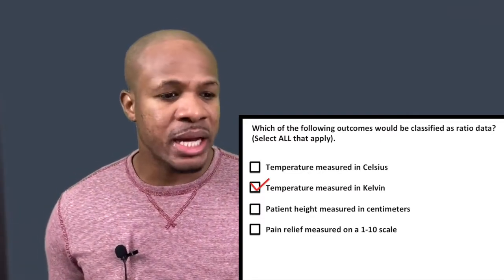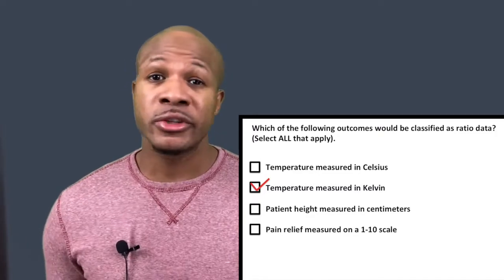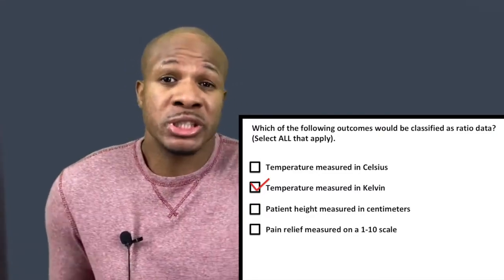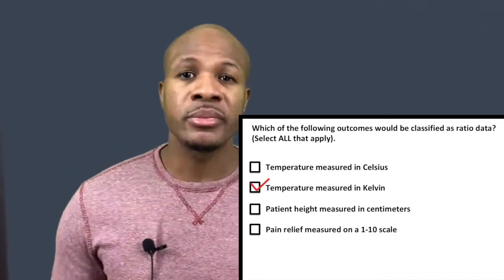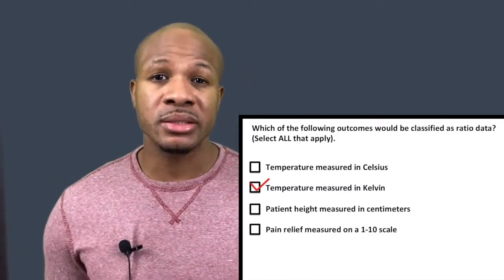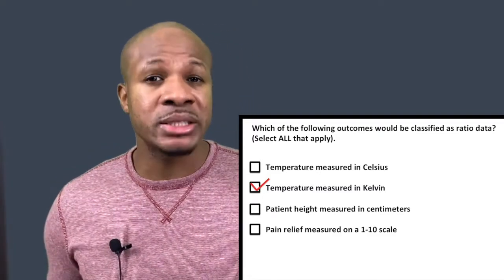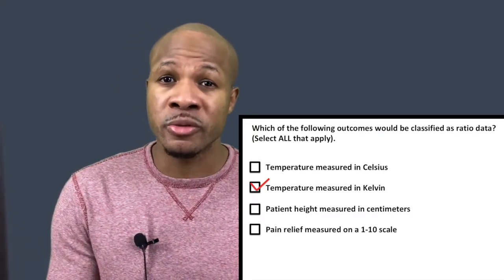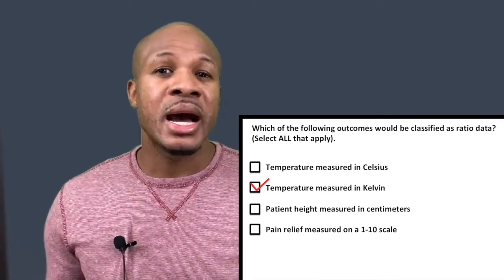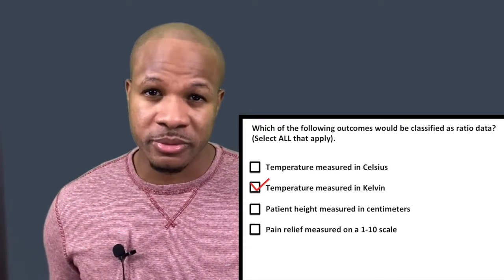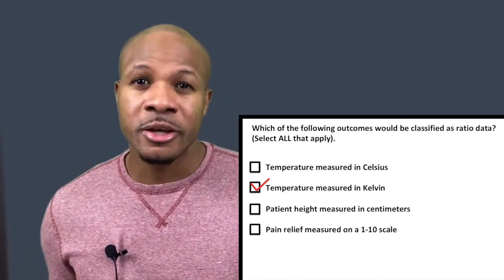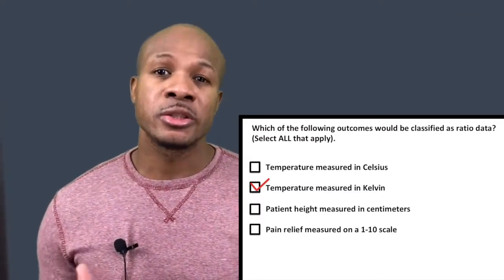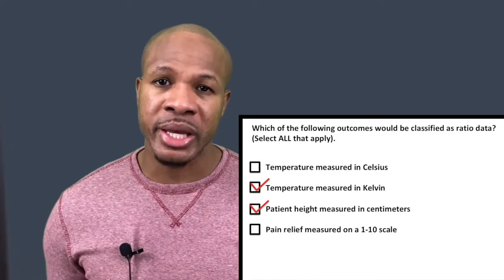C says: patient height measured in centimeters. First, is that continuous? Yes, that's continuous data because a person, theoretically, could be any height. Now, does it have an absolute zero value? Zero height corresponds to a true absolute value of having no height. Height cannot take on negative values — you can only have zero height or a height greater than zero. So height would definitely correspond to ratio data.